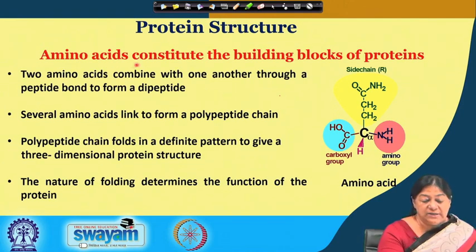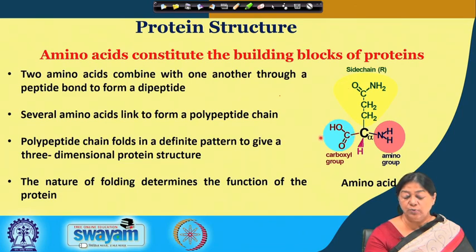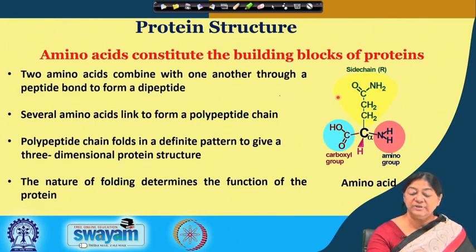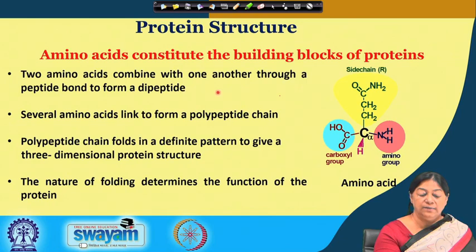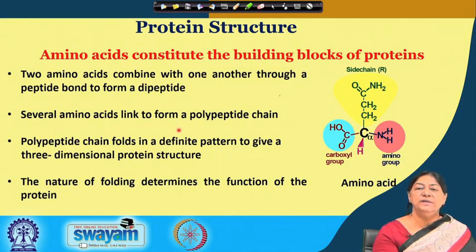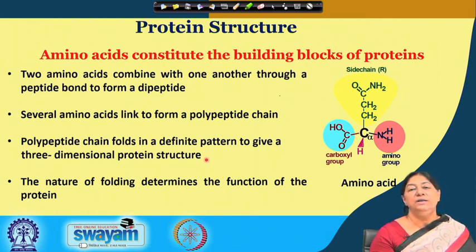When we look at amino acids that constitute the building blocks of proteins, we have the amino group, the carboxylic acid group, and a specific side chain. When we form the protein, these amino acids are the building blocks. The amino acids combine with one another through a peptide bond to form a dipeptide. Several of these amino acids then form a polypeptide chain, which folds into a definitive pattern, forming the native structure of the protein.